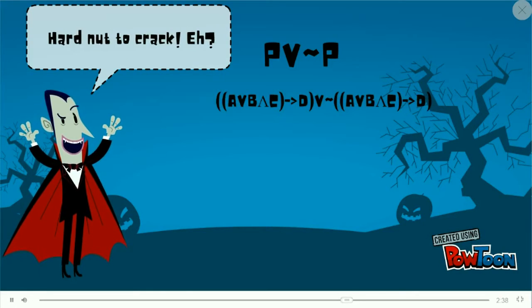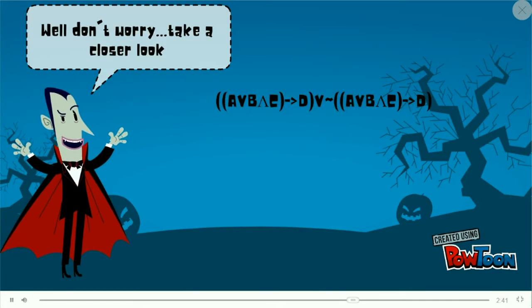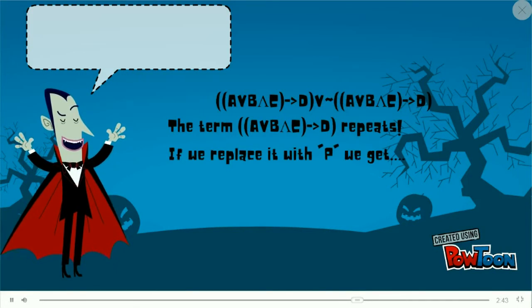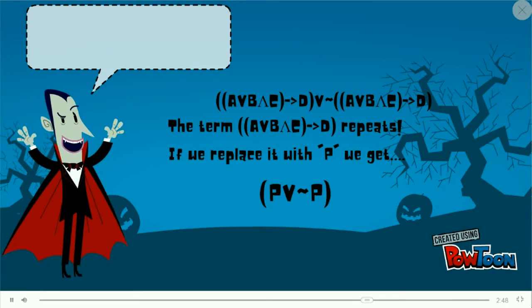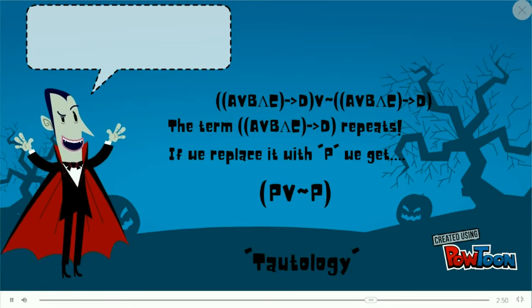Take this example. It's difficult. But here, P is replaced by A or B and C conditional D. Don't worry. Even if you solve it, the answer is still true. That's tautology.